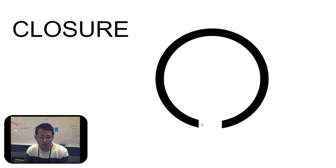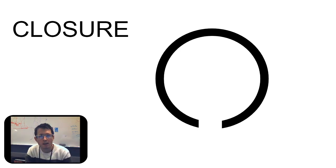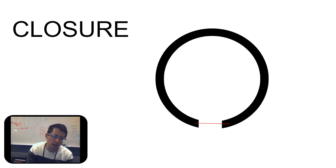And closure is another one, where somehow our eyes will fill in the gaps between these things. Somehow we see this as a circle. We could have seen this as a light bulb, but we don't. We see this as a full circle — we don't necessarily see it as a C. So our mind fills in that gap for us.